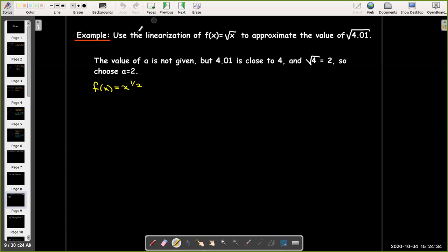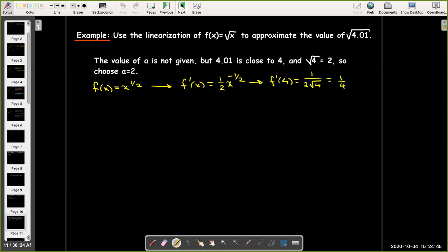So let's see. f of x equals x to the 1 half power. So I can use the power rule. Find f prime of x and find f prime at 4. And that's going to be 1 fourth.